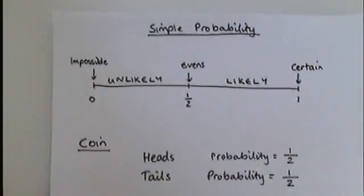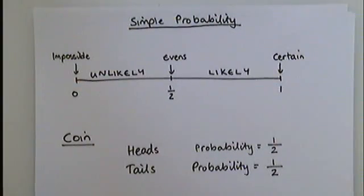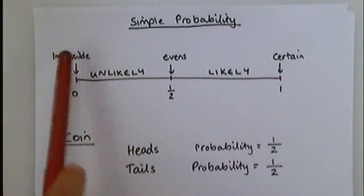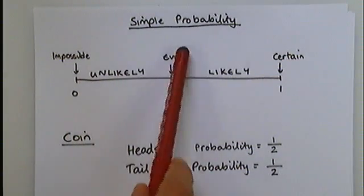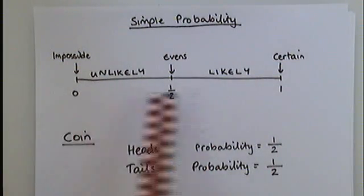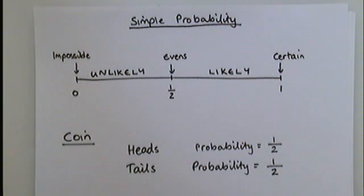To remember: with simple probability, you've got words like impossible, unlikely, evens, likely, and certain. They fit on the number line with a half being the probability representing evens.